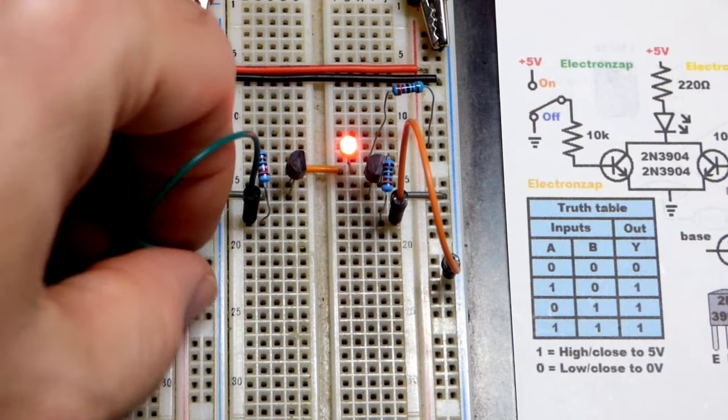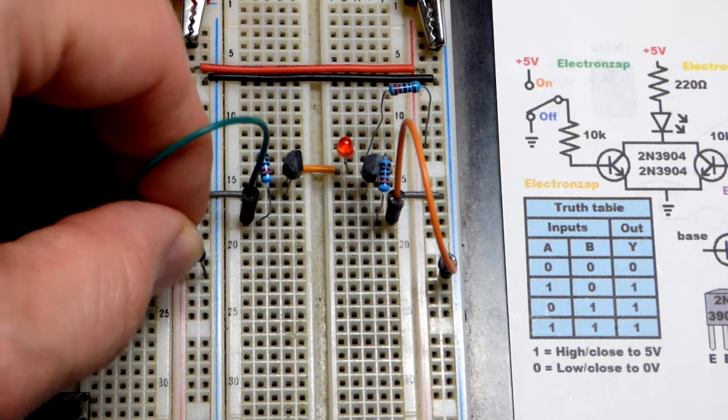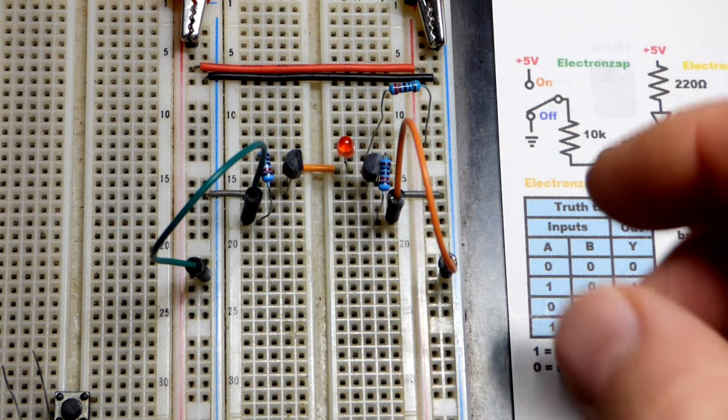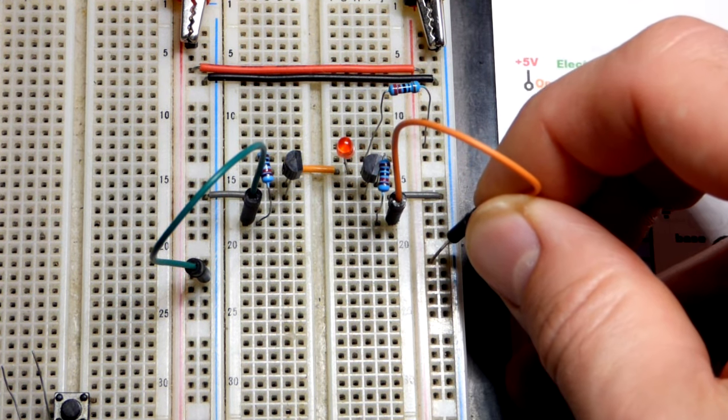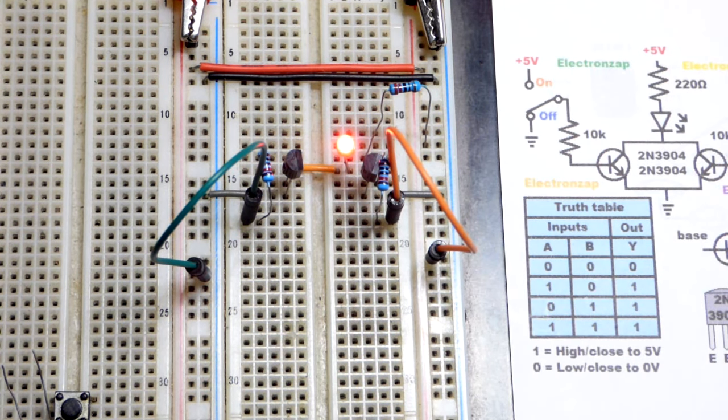Now, we can put this back to the negative supply. So, now we got both negative, the left one positive, high input, gave us a high output, an LED on. We can also go to the positive supply on this side. And now the LED is on.